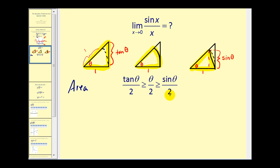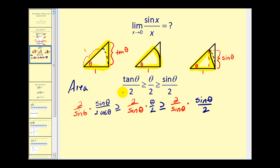Geometrically, we can see that the area of this sector is between the area of this larger triangle and this smaller triangle. Next, we're going to multiply every term by two divided by sine theta. Notice I also changed tangent theta into sine theta divided by cosine theta.